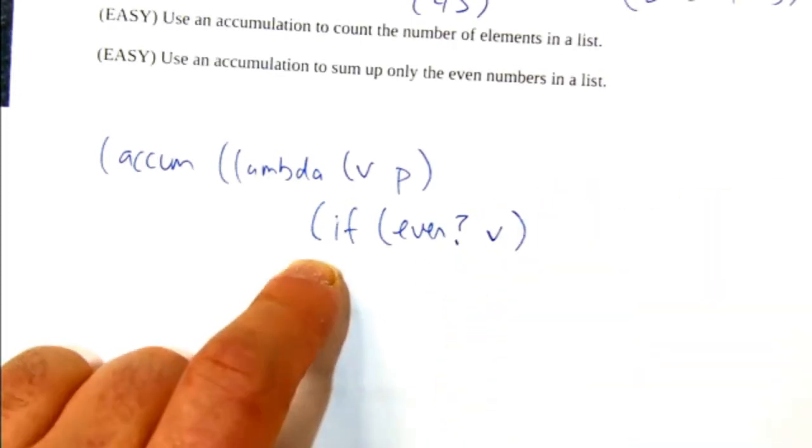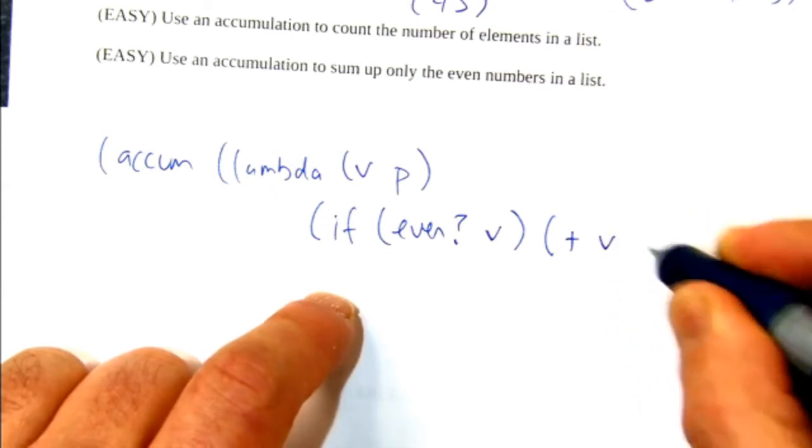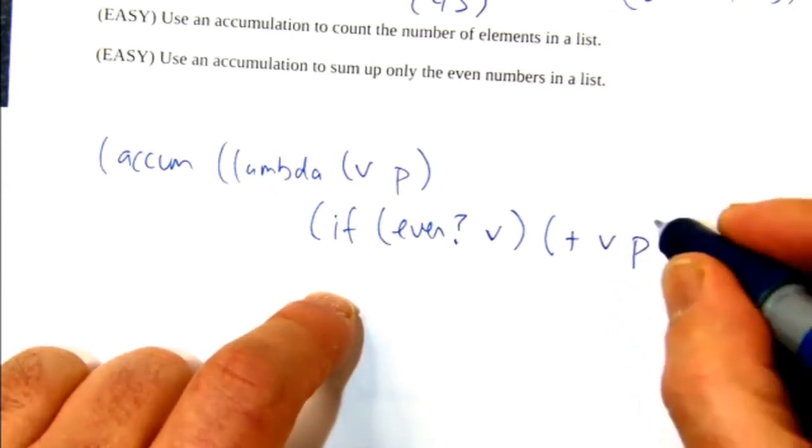And if V is even, what do we do? Yeah, we add these two together. So then we're like, OK, we're going to add V to the prior sum. So V will now be included in the sum.